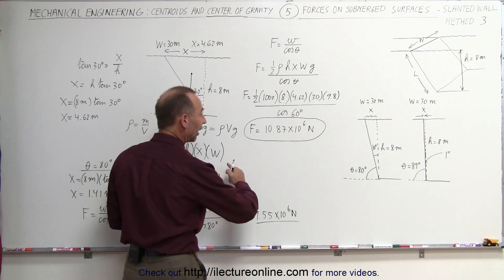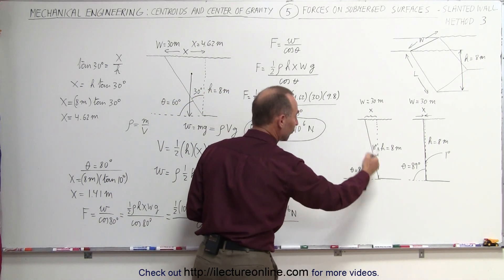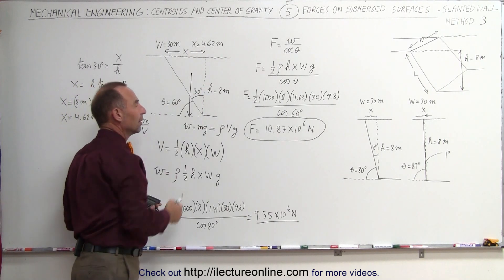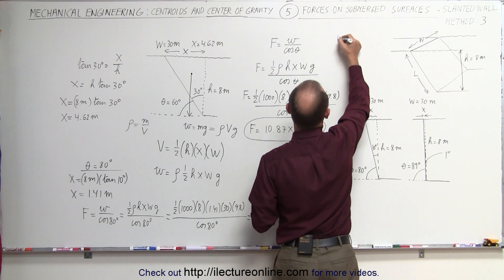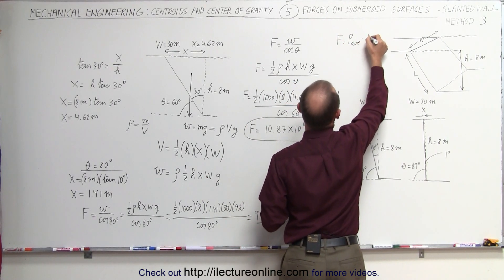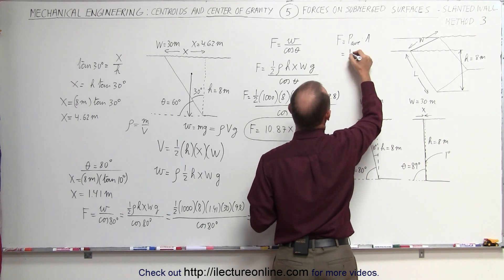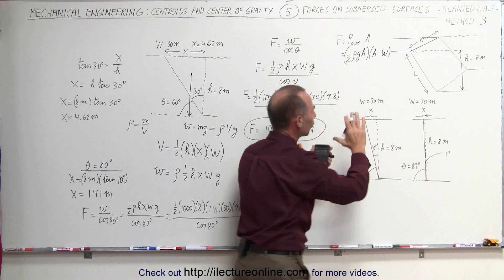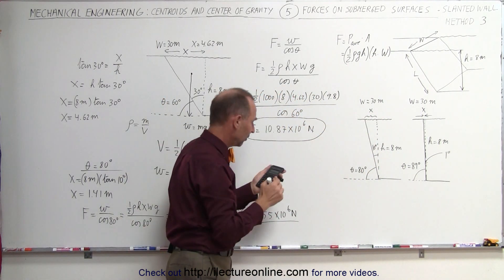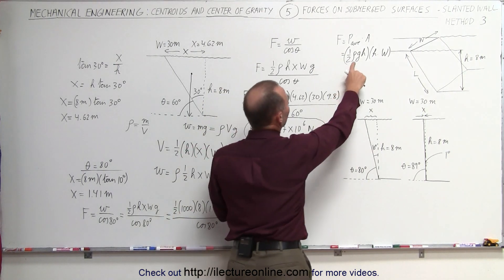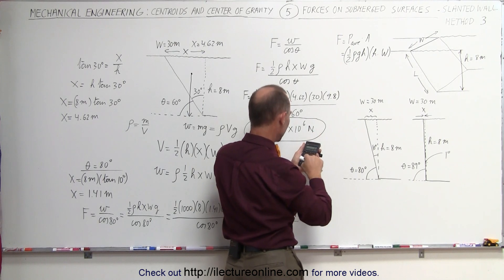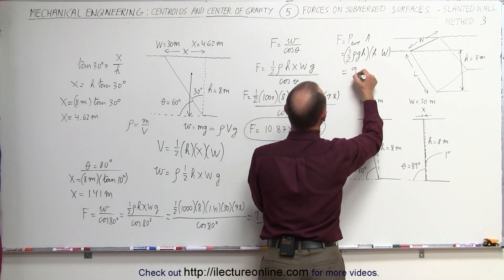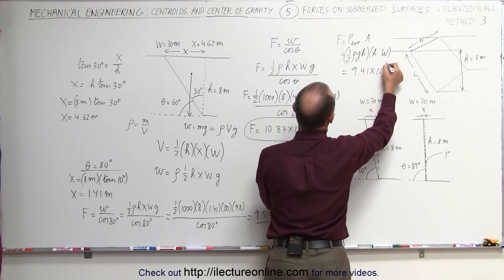The force is a little bit less. As the slant gets smaller and closer to a vertical dam, the force approaches what it would be for a purely vertical dam. For a vertical dam, the force equals the average pressure times the area: one-half times rho times g times h times h times w, which is 500 times 9.8 times 64 times 30, giving a total force of 9.41 × 10⁶ Newtons.